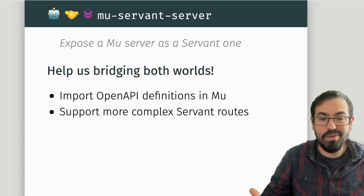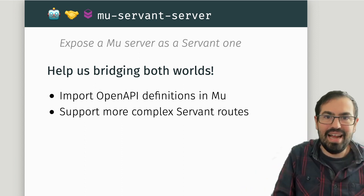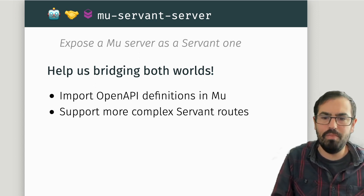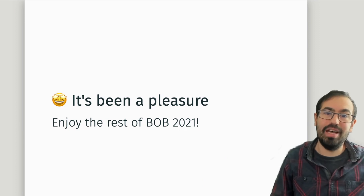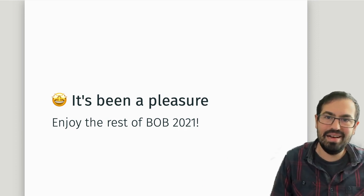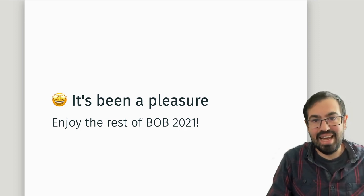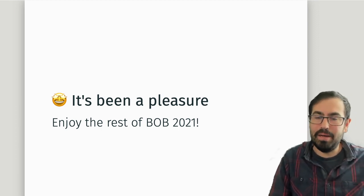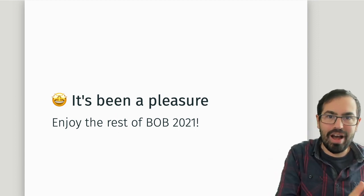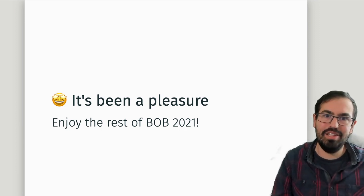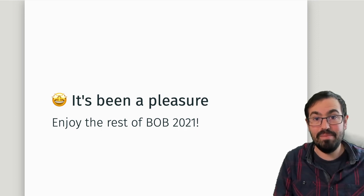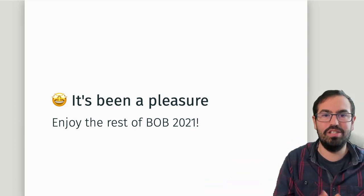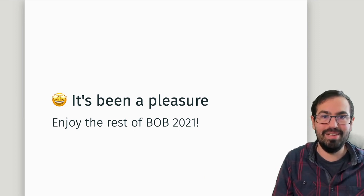That's all I wanted to say about the Mu-Servant bridge. As I said, you can help us bridge both worlds — we didn't have time to do many things, like importing an OpenAPI definition for more complex Servant routes. Mu is something I've devoted a lot of time to, and I've taken a lot of inspiration from Servant, which is a great library and really set the stage for how strong types can move from toy examples into something very useful like a web service. Enjoy the rest of the conference, and I'll be happy to hear any suggestions, questions, or anything about Mu and Servant. Thanks for watching.